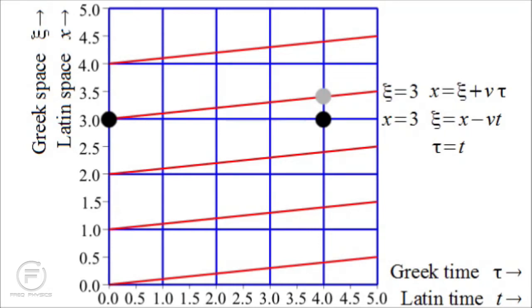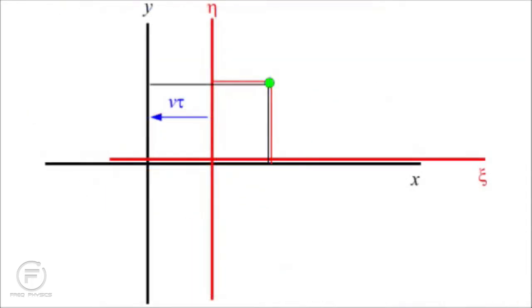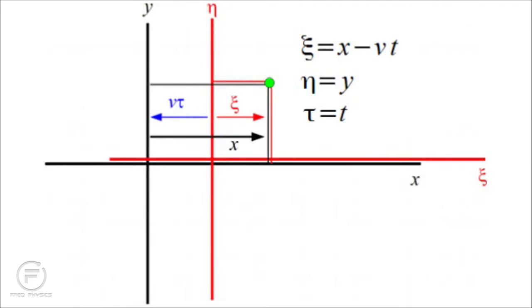You explain that if at time 0 an object was at x equals 3 and psi equals 3, then at time 4, to have remained at psi equals 3 it would need to be moving with velocity v along with the Greek reference frame. But a truly at rest object, still at x equals 3 at time 4, would actually have a psi coordinate less than 3. This is very clear — until the Greeks explain that they are the ones at rest, and you Latins are actually moving to the left with velocity v.